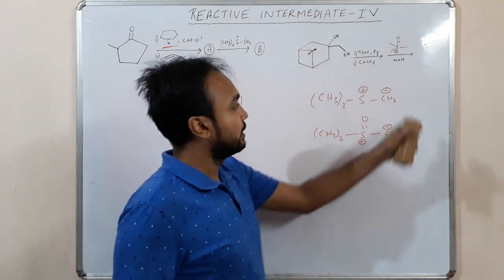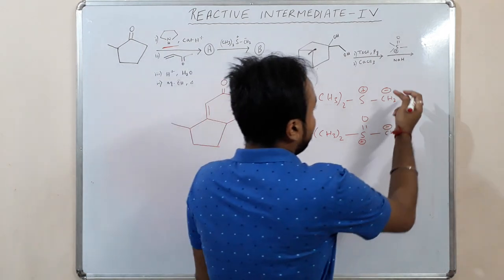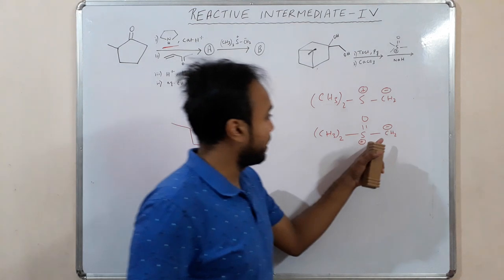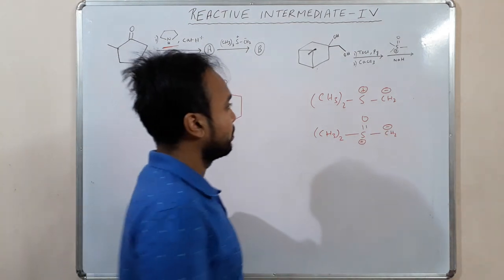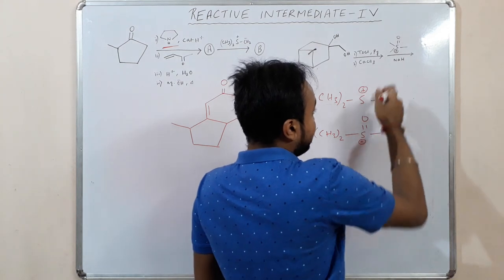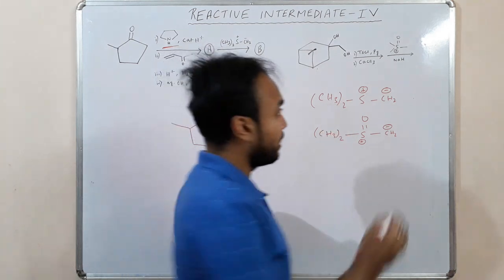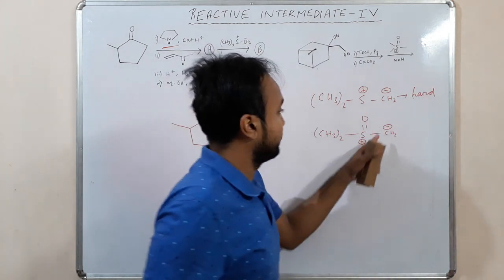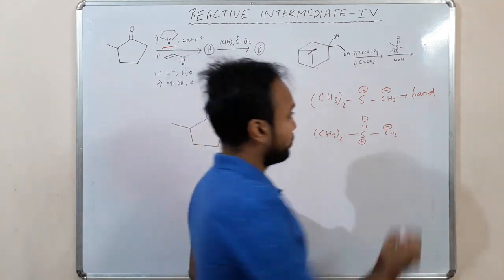This is a sulphur ylide. This negative charge is not stabilized, whereas this negative charge is stabilized by the oxygen group. Because of this destabilized negative charge, this sulphur ylide is hard. And since the other is undergoing conjugation, it becomes soft.